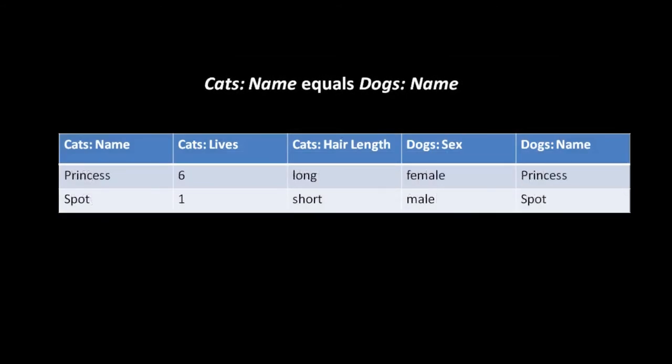If we tweak our example tables by changing a few of the cat names, and once again do the cross-join, then with an inner join we can filter by a more useful predicate. Here we're filtering for all rows where the cat's name value equals the dog's name value - ending up with a table that lists names shared by both a cat and a dog. Hopefully you can begin to see how joining tables together might be useful.